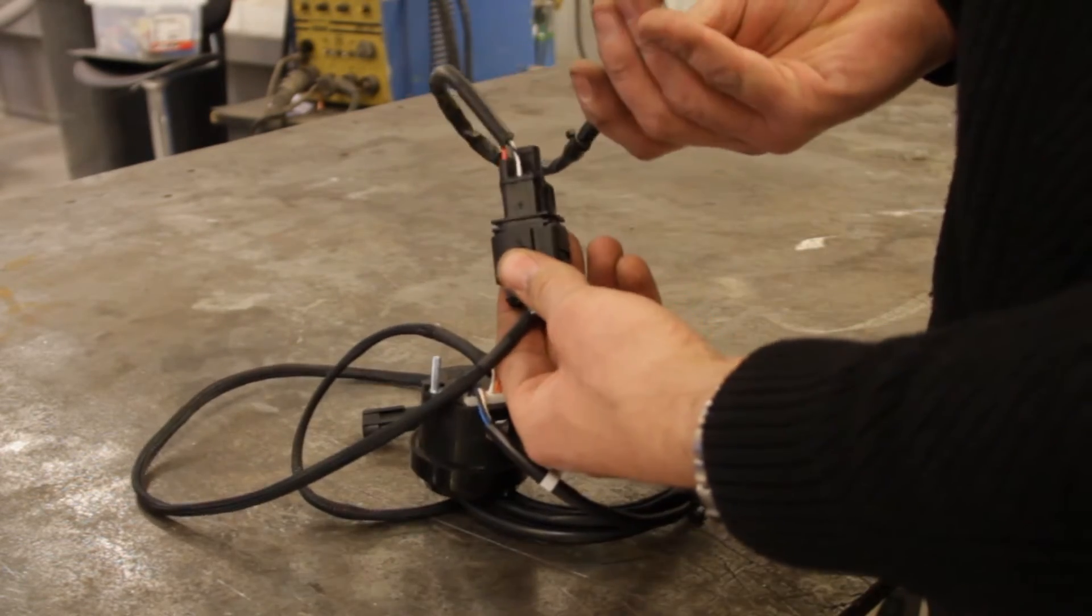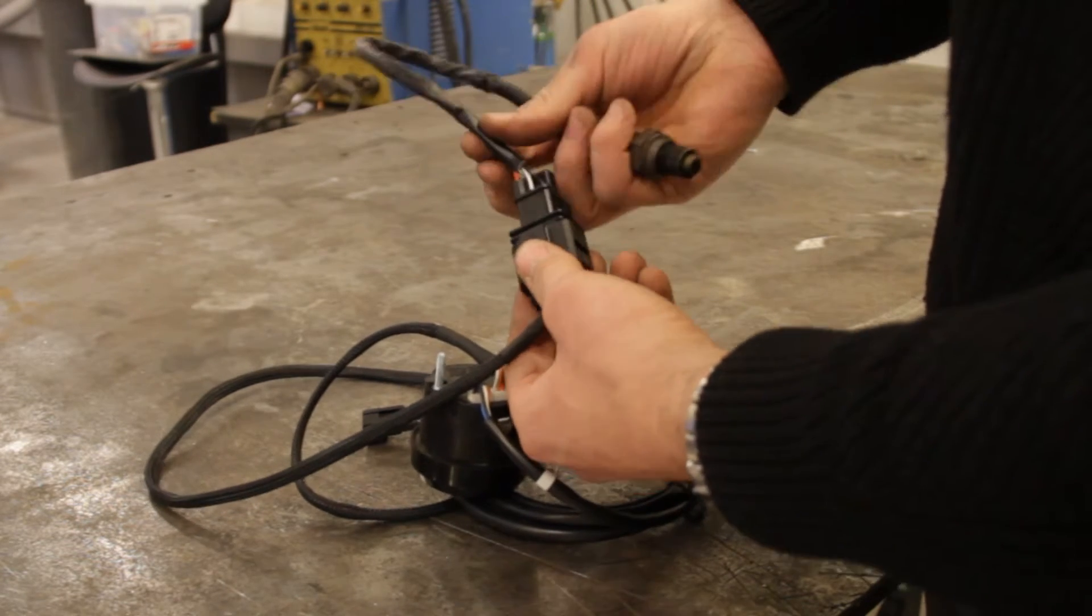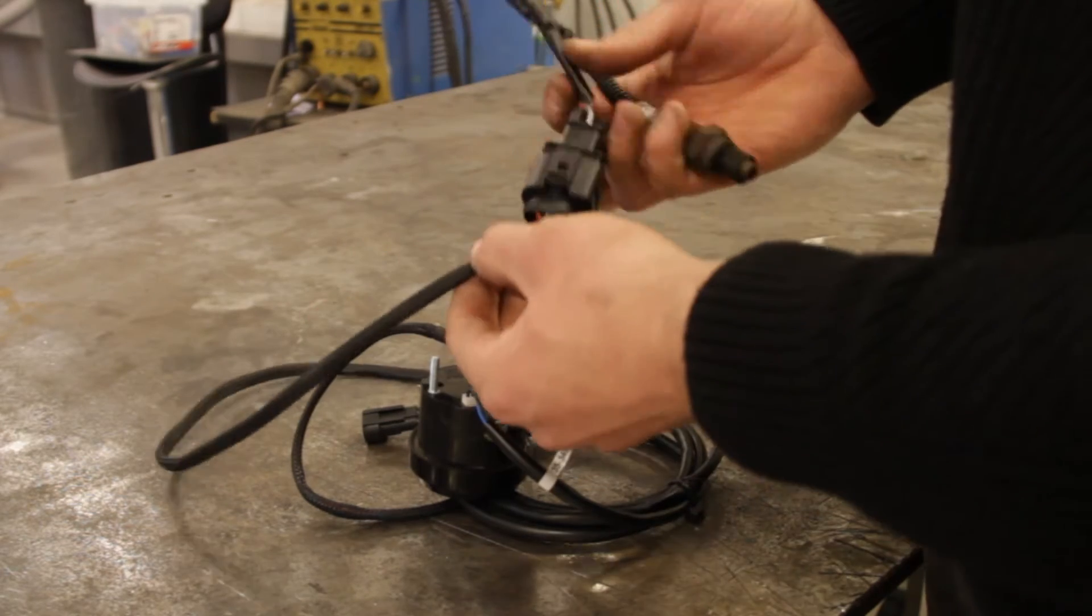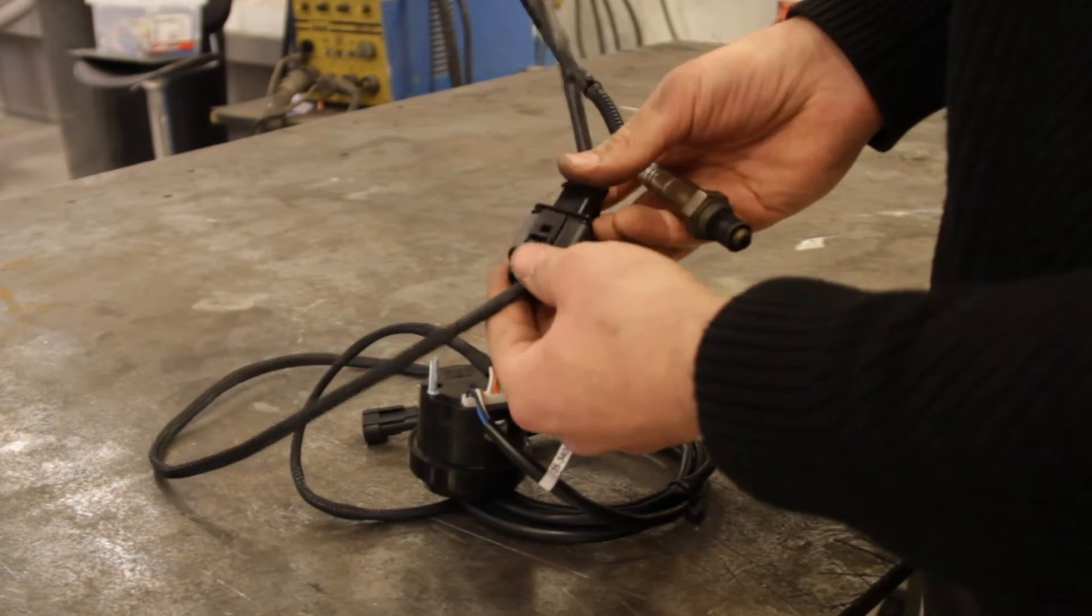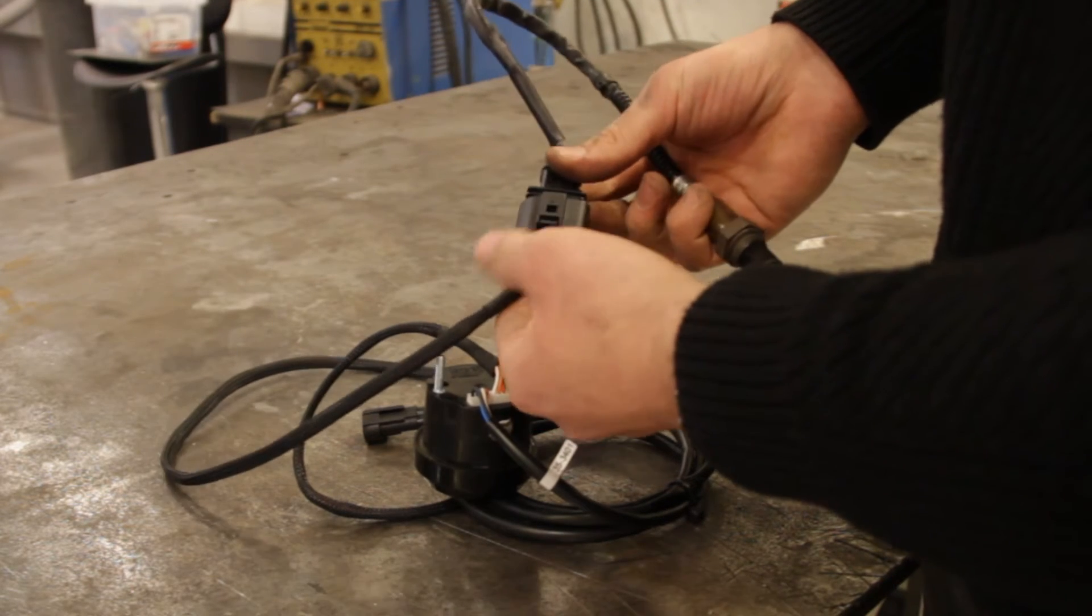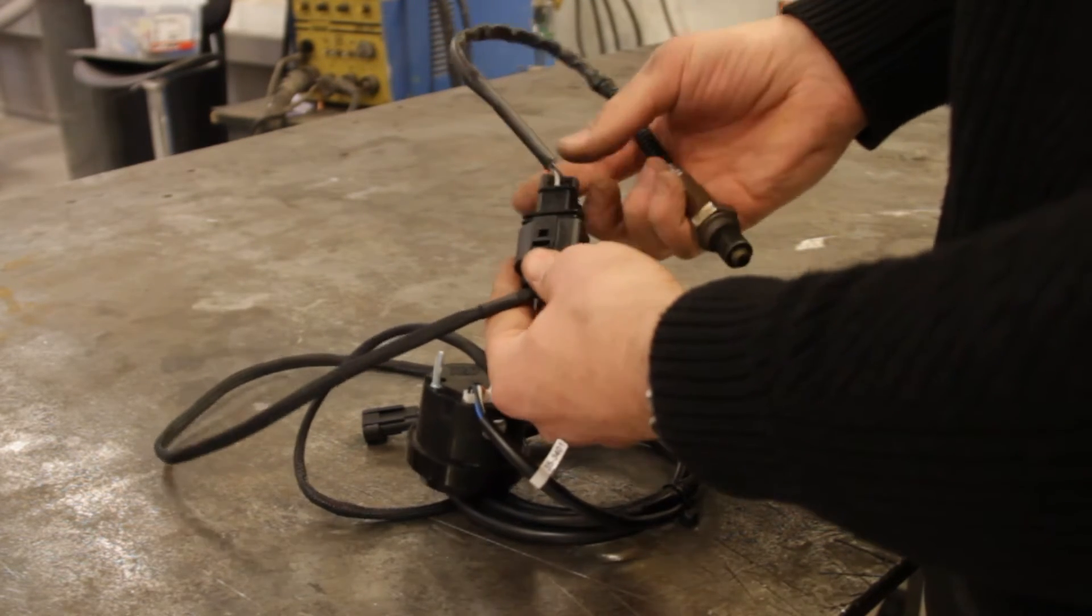You can buy the AEM sensor of course and the wiring is 25 US dollars, and the sensor is like 85 or 90 dollars or something. It's kind of over the top I think.